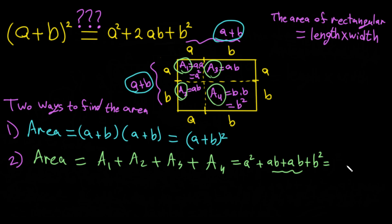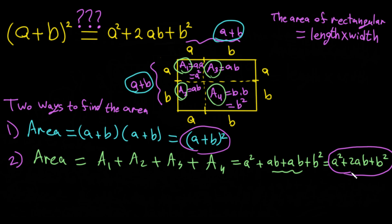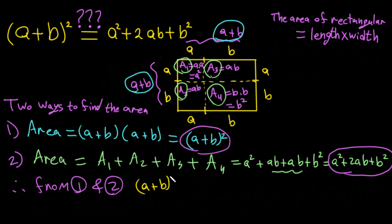And of course this becomes 2ab, so the total is a squared plus 2ab plus b squared. Now we have these two expressions equal to each other, which is our conclusion. Therefore, from method 1 and method 2, (a + b) squared equals a squared plus 2ab plus b squared. That's it — this is how we visualize it geometrically. One of the mysteries of math has been cleared. See you next time!